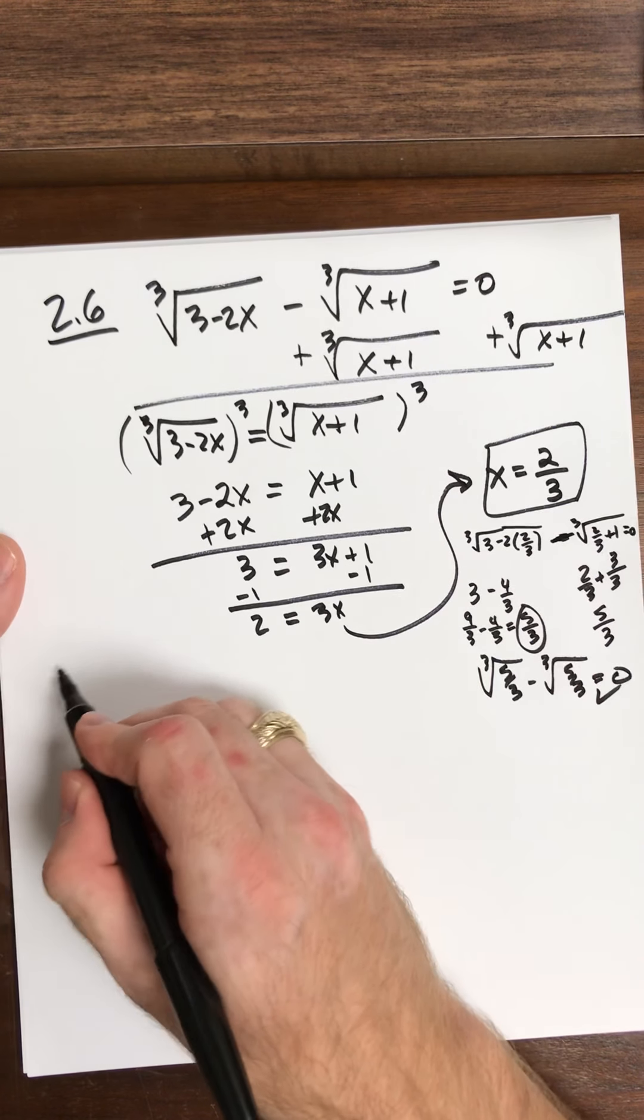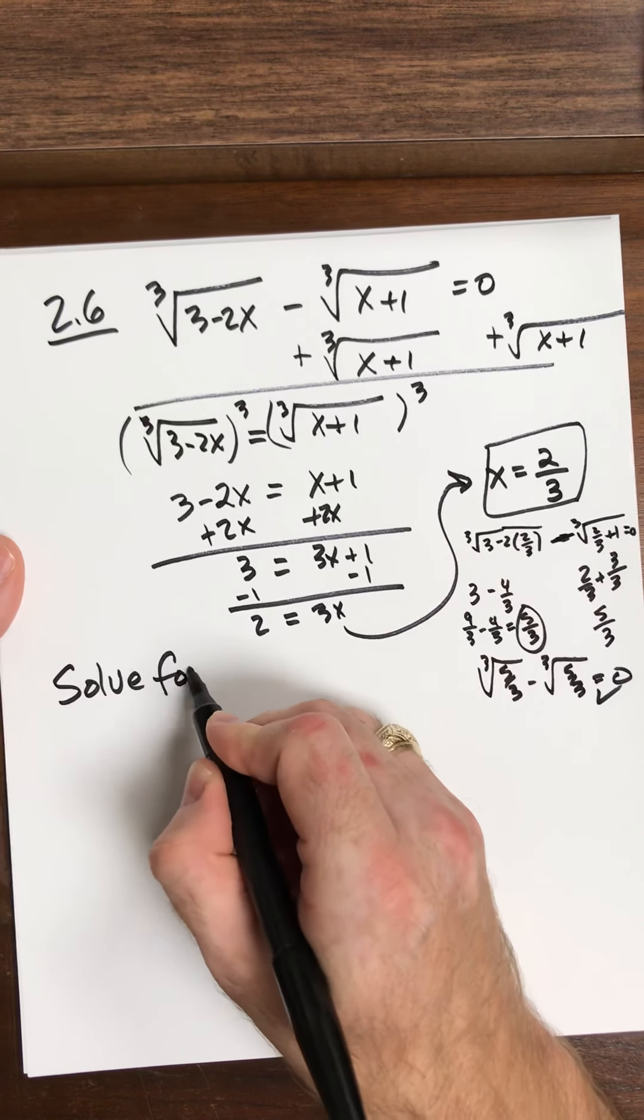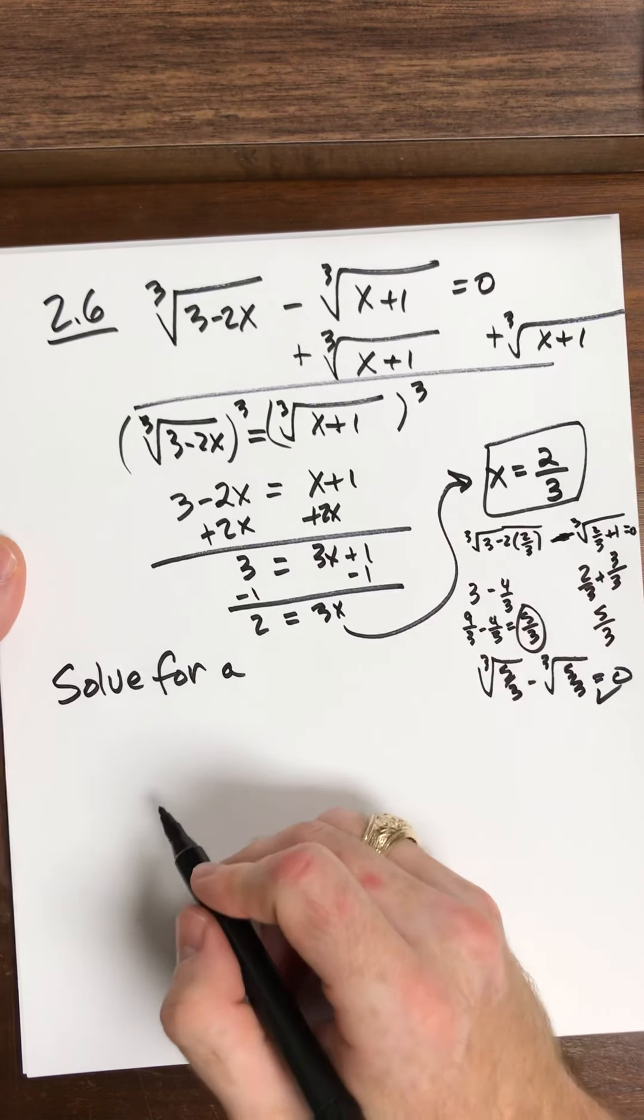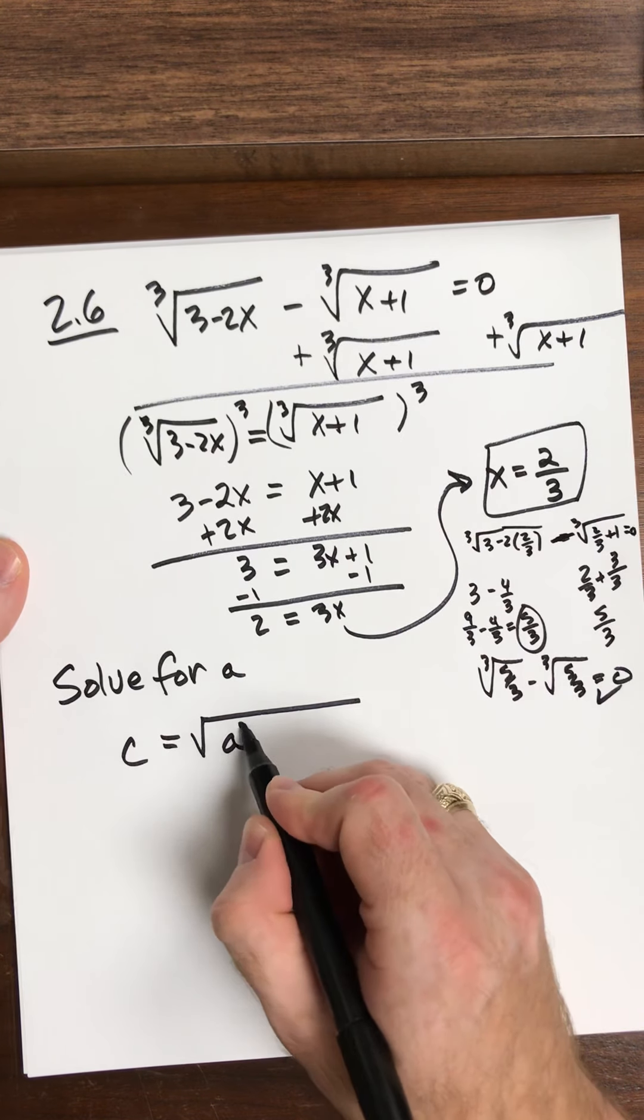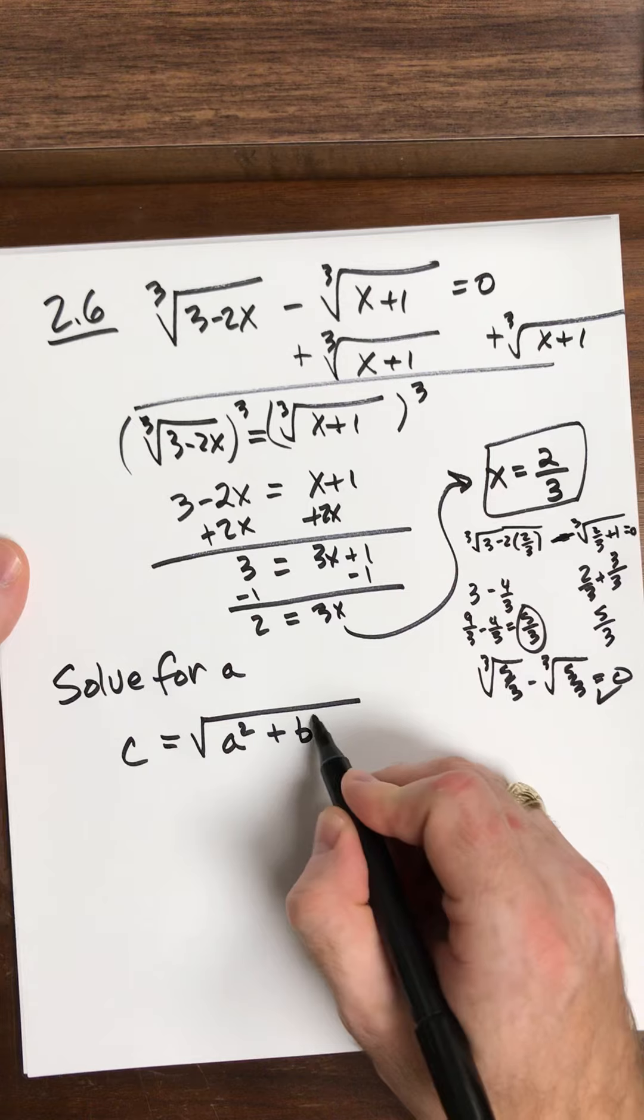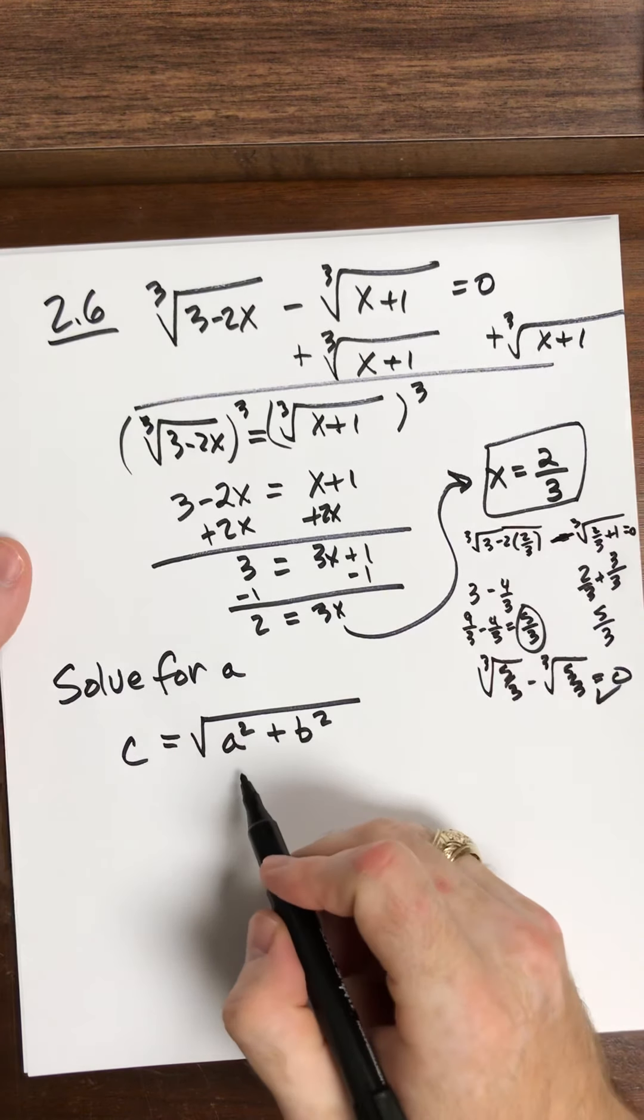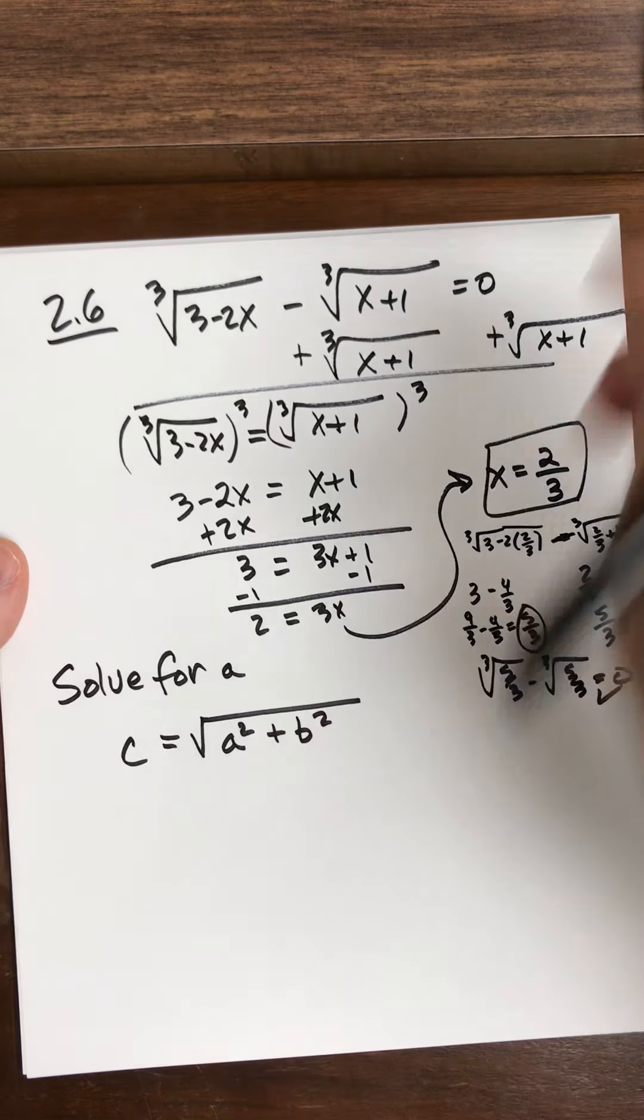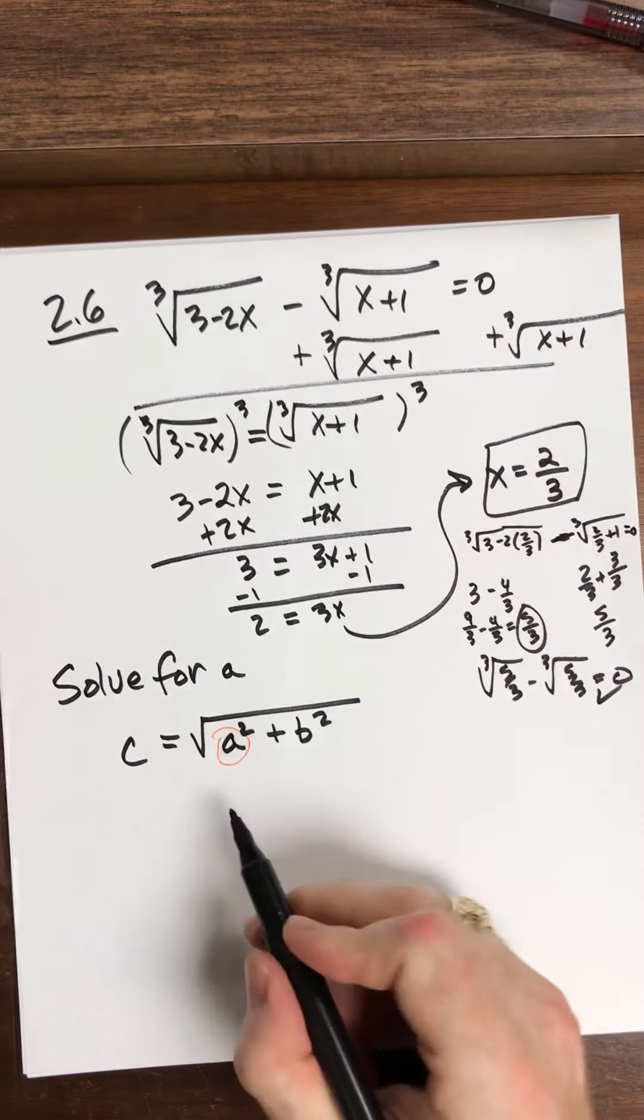Now, one more you might see in your homework. You're going to solve for A, so they're going to give you some formula. Maybe the formula is the length of the hypotenuse on a right triangle. I want A by itself, so maybe it helps to circle the letter I'm trying to get by itself.